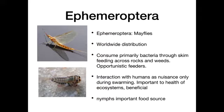The Ephemeroptera are your mayflies, with worldwide distribution. They consume bacteria, skimming the surface of water and rocks. They tend to swarm in huge numbers for a very short period of time, but they are very important to ecosystem health and beneficial as a food source. In nymph form they're a common food source for many fish and aquatic organisms. If you go fly fishing, mayflies are a common lure used both in nymph and adult form.